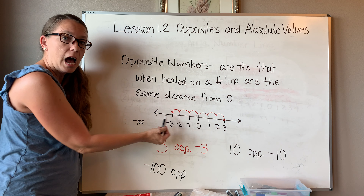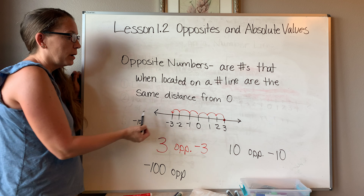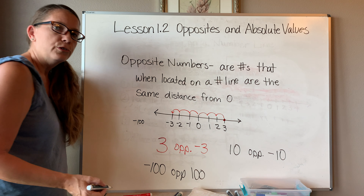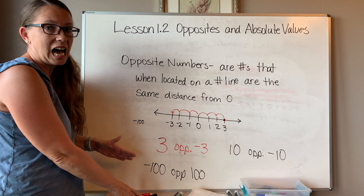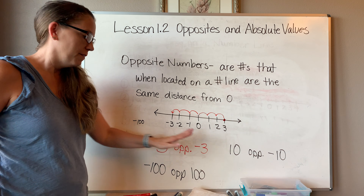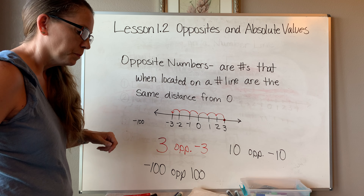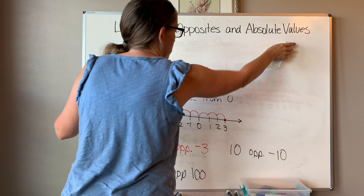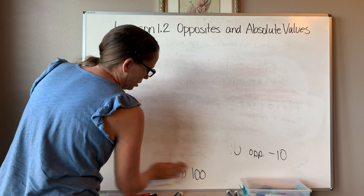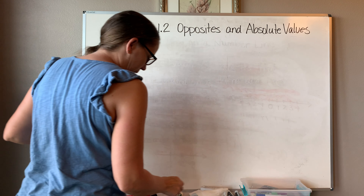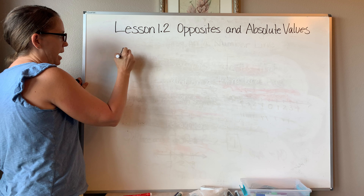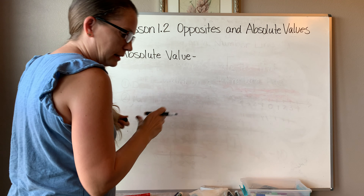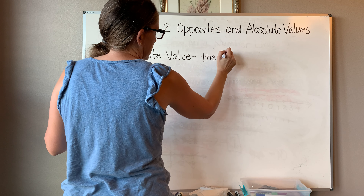Pretty easy, right? What is the opposite of 10? If you have 10 over this way, you'd go 10 the other way, giving you negative 10. So the opposite of 10 is negative 10. What about the opposite of negative 100? If you're at negative 100, you're still 100 spaces from zero. Going 100 spaces to the right instead gives you positive 100. So the opposite of a number just changes the sign — positive becomes negative, negative becomes positive.